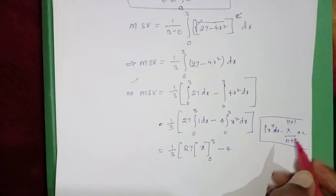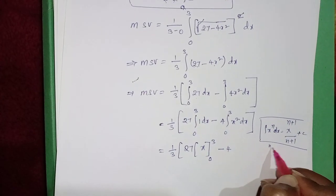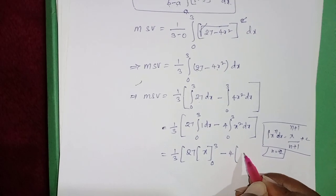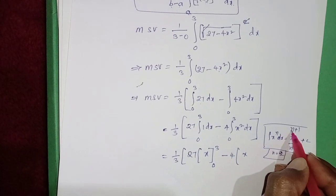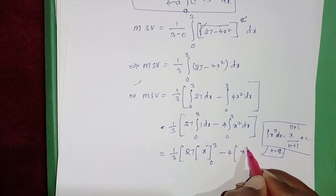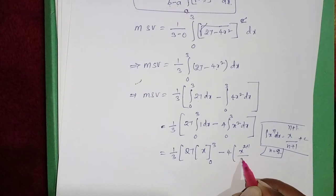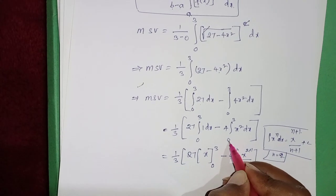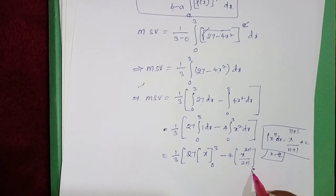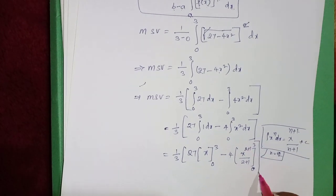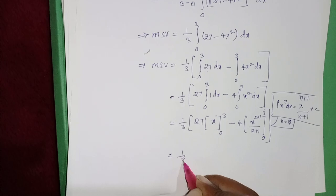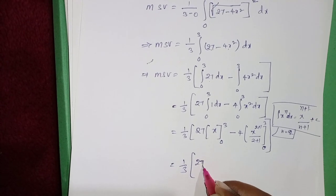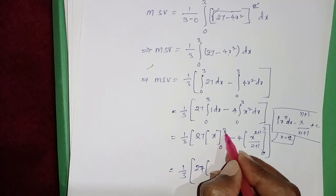With n = 2, the integral of x² becomes x^(2+1) / (2+1) = x³/3. So we have: MSV = (1/3) × [27 × [x] from 0 to 3 − 4 × [x³/3] from 0 to 3].